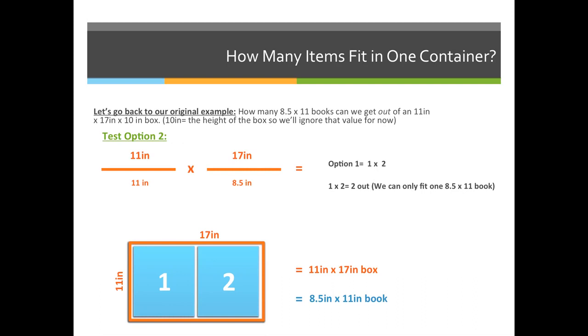So if we were to compare option one, which is one out, and option two is 2 out, you take the greater value and say that we can fit two books out in this box.